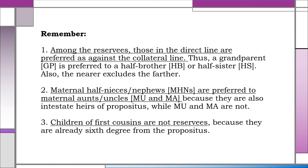With respect to reserva troncal, remember the following. 1. Among the reservees, those in the direct line are preferred over the collateral line. Thus, a grandparent is preferred to a half-brother or half-sister. Also, the nearer excludes the farther.